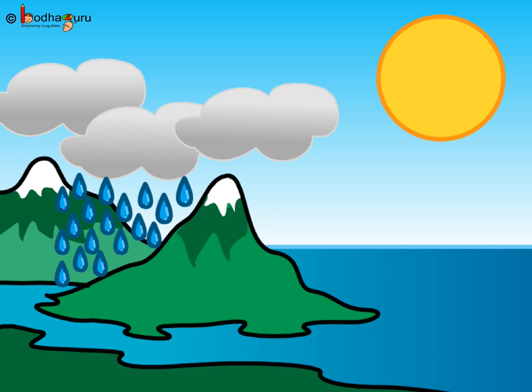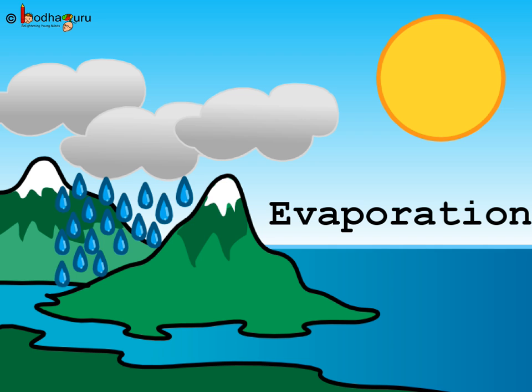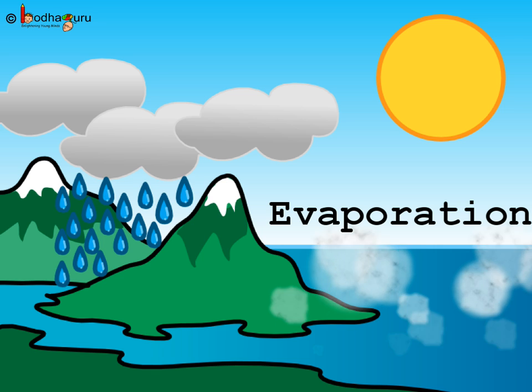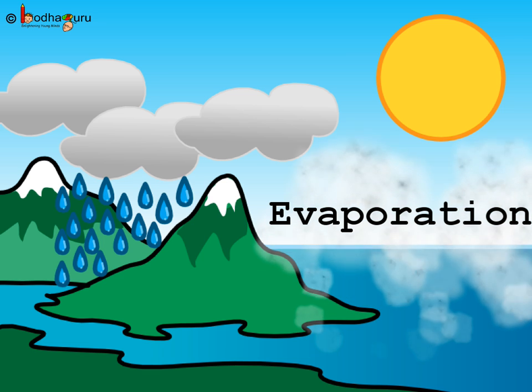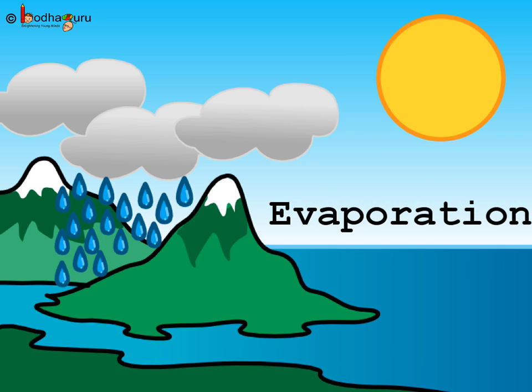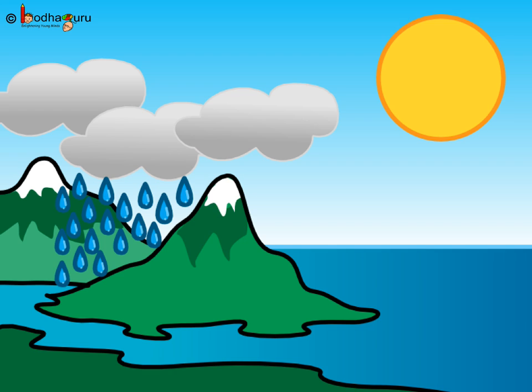Just like water vapour from boiling water changes into droplets of water on cooling, the same thing happens to water evaporated from various bodies. This water vapour rises up into the sky, meets the cool air, becomes cold, and changes into water droplets. The water droplets keep collecting to form clouds.